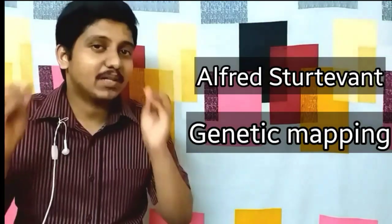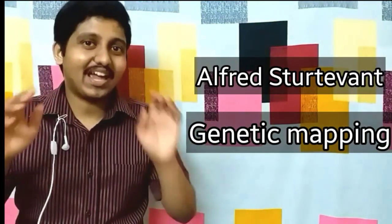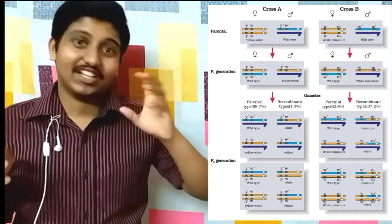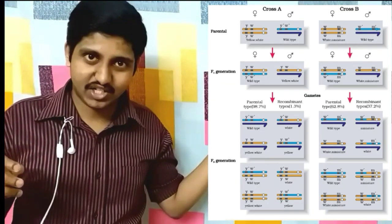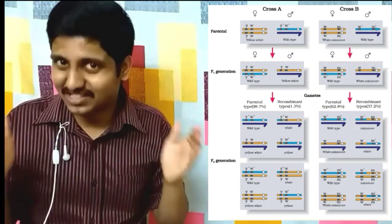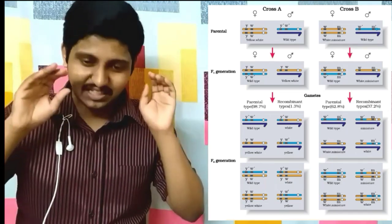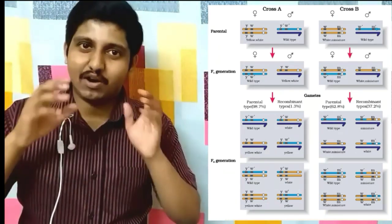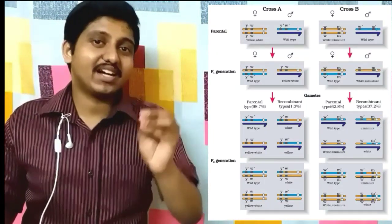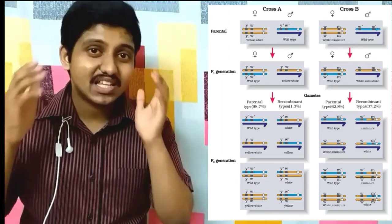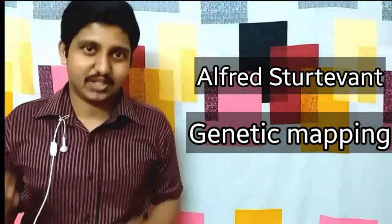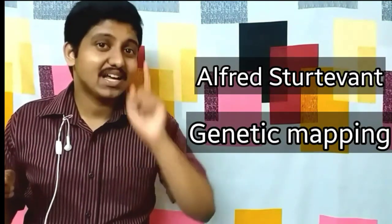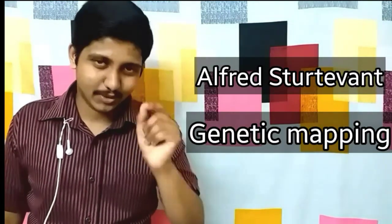Another important point concerns Alfred Sturtevant, one of Morgan's students. He performed genetic mapping — mapping the positions of genes on a chromosome — using the frequency of recombination as a basis for estimating distances between gene pairs. His method of gene mapping became the foundation for the Human Genome Project and was an important contribution to genetics.